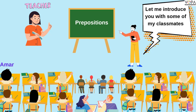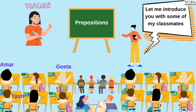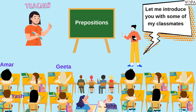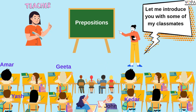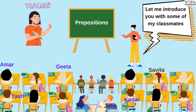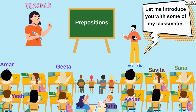Here is Amar. She is Geeta. He is Yash. Here is John. He is Kedar. She is Savita. And she is Sana.